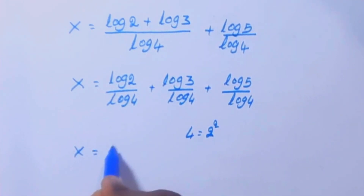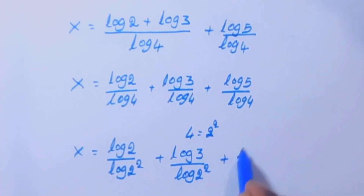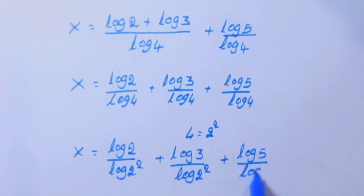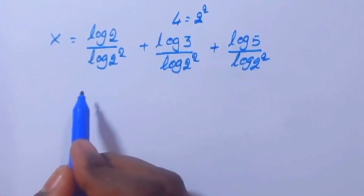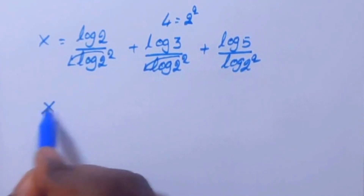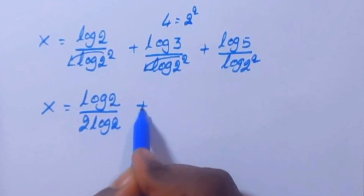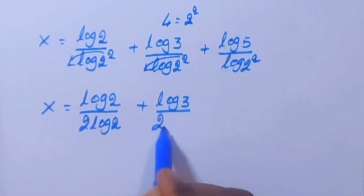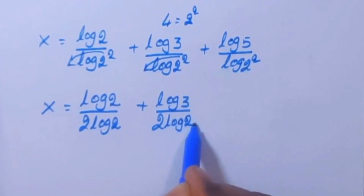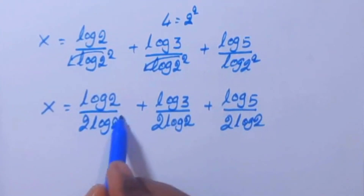So x equal to log 2 by log 2 power 2, plus log 3 by log 2 power 2, plus log 5 by log 2 power 2. Now according to the log power formula, the 2 in the denominator moves out, so x equal to log 2 by 2 log 2, plus log 3 by 2 log 2, plus log 5 by 2 log 2. This log 2 cancels.